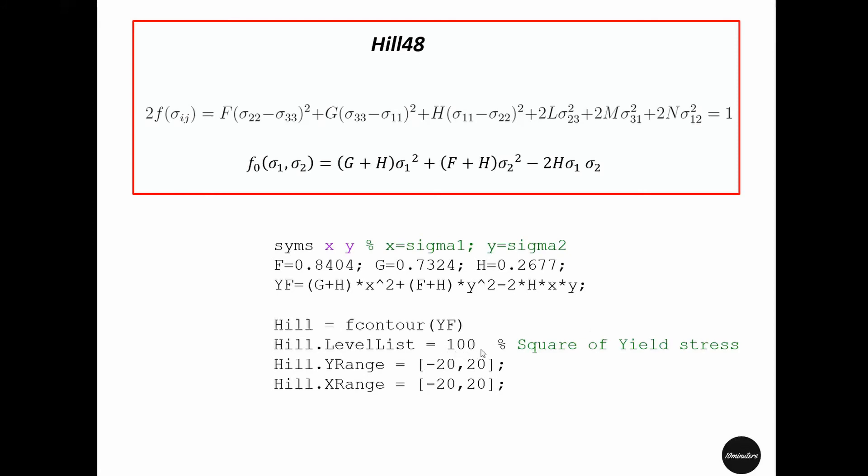We will set it to 100 which is the square of the yield stress at zero degree orientation. So just to notice that for von Mises plot we used 10, but for Hill48 yield surface plot we are using 100 which is the square of number 10, and the range in y and x of this plot remains the same as von Mises, which in this case is 2 multiply root over of 100.